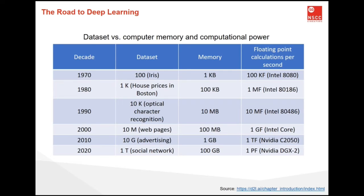Consequently, the sweet spot in machine learning and statistics moved from generalized linear models and kernel methods to deep neural networks. This is also one of the reasons why many mainstays of deep learning — such as multilayer perceptrons, convolutional neural networks, long short-term memories, and Q-learning — were essentially rediscovered in the past decade, after laying comparatively dormant for considerable time.